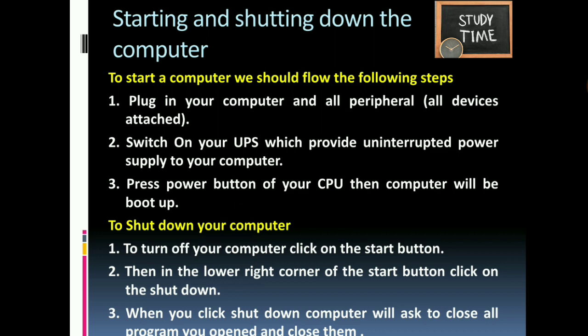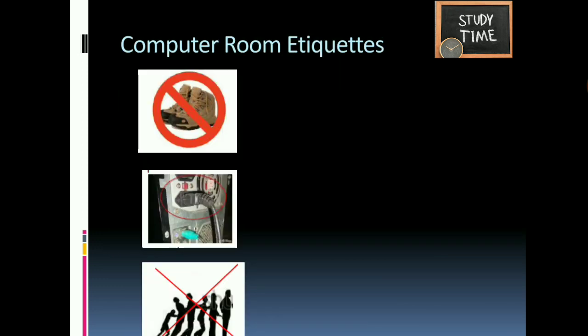To shut down the computer, first close all applications that are open. Then click the Start button at the lower right corner and click on Shut Down. When you click Shut Down, the computer will close all open programs and then power off.